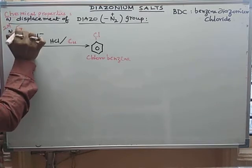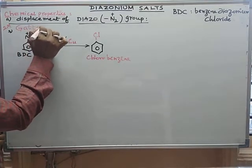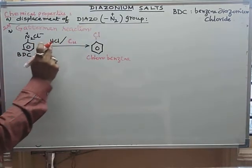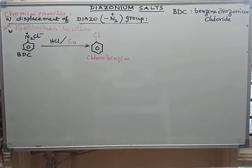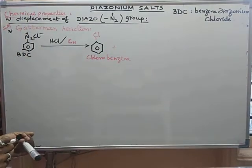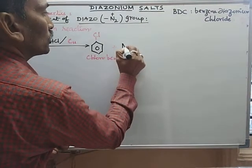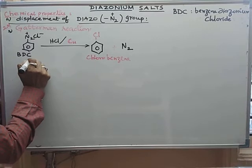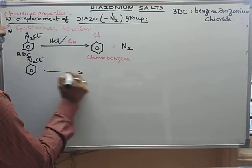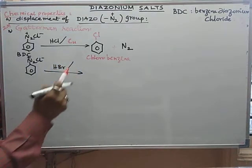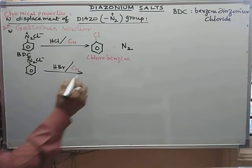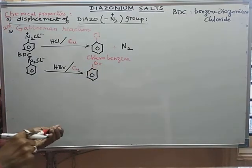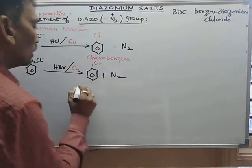For the Gattermann reaction two-mark question: benzene diazonium chloride treated with HCl in the presence of copper metal gives chlorobenzene, and N2 gas is liberated. Similarly, benzene diazonium chloride treated with HBr with copper metal introduces Br on the benzene ring and liberates N2 gas to give bromobenzene.